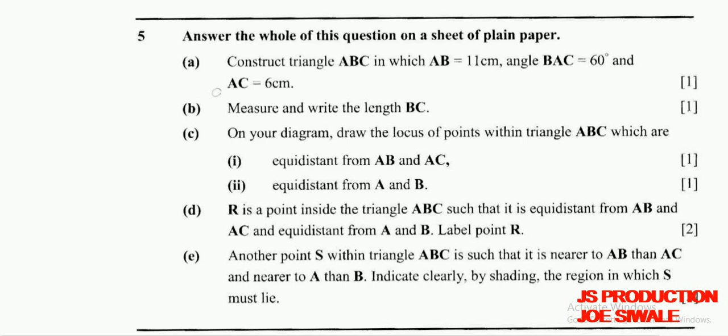L2: equidistant from A and B. One mark. Then Question D reads: R is a point inside triangle ABC such that it is equidistant from AB and AC. Question E reads: another point S within triangle ABC is such that it is nearer to AB than AC and nearer to A than B. Indicate clearly by shading the region in which S must lie. Two marks.